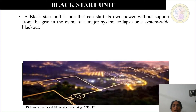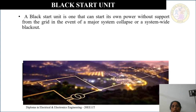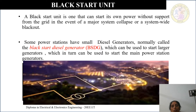A blackstart unit is one that can start its own power without support from the grid in the event of a major system collapse or a system-wide blackout. So usually we supply the grid from the generating station and power plants. If that grid fails, what is the alternative? That is where the blackstart unit is used.